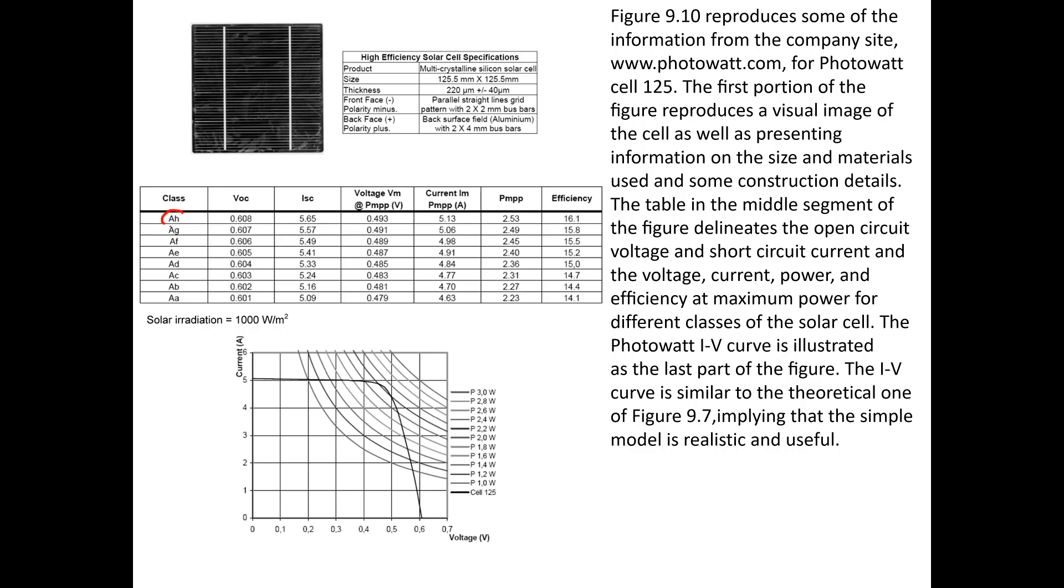It gives that the open circuit voltage is 0.608 volts, the short circuit current is 5.65 amps. Here we have the voltage at max power, which is 0.493 volts per cell. And then we're given that the maximum power from a cell is 2.53 watts, and that the current at maximum power is 5.13 amps.